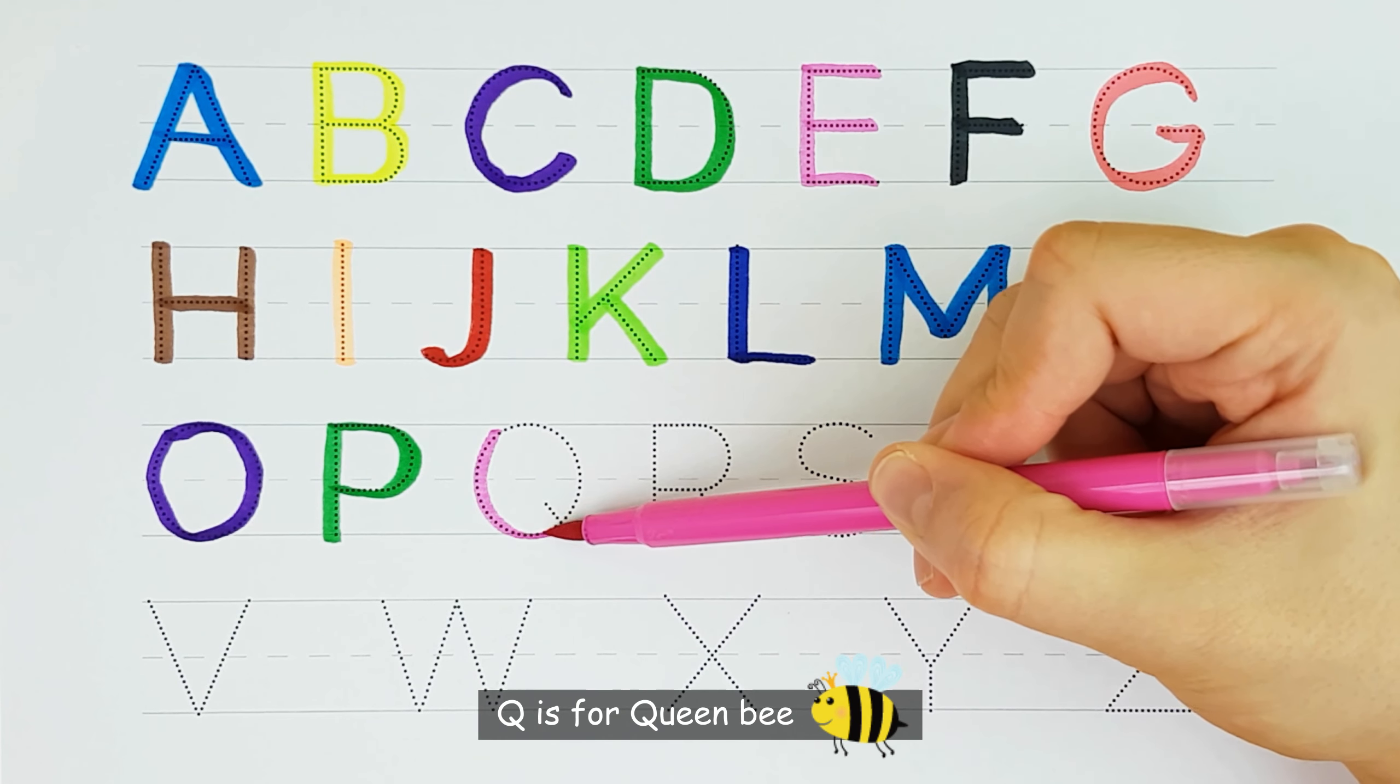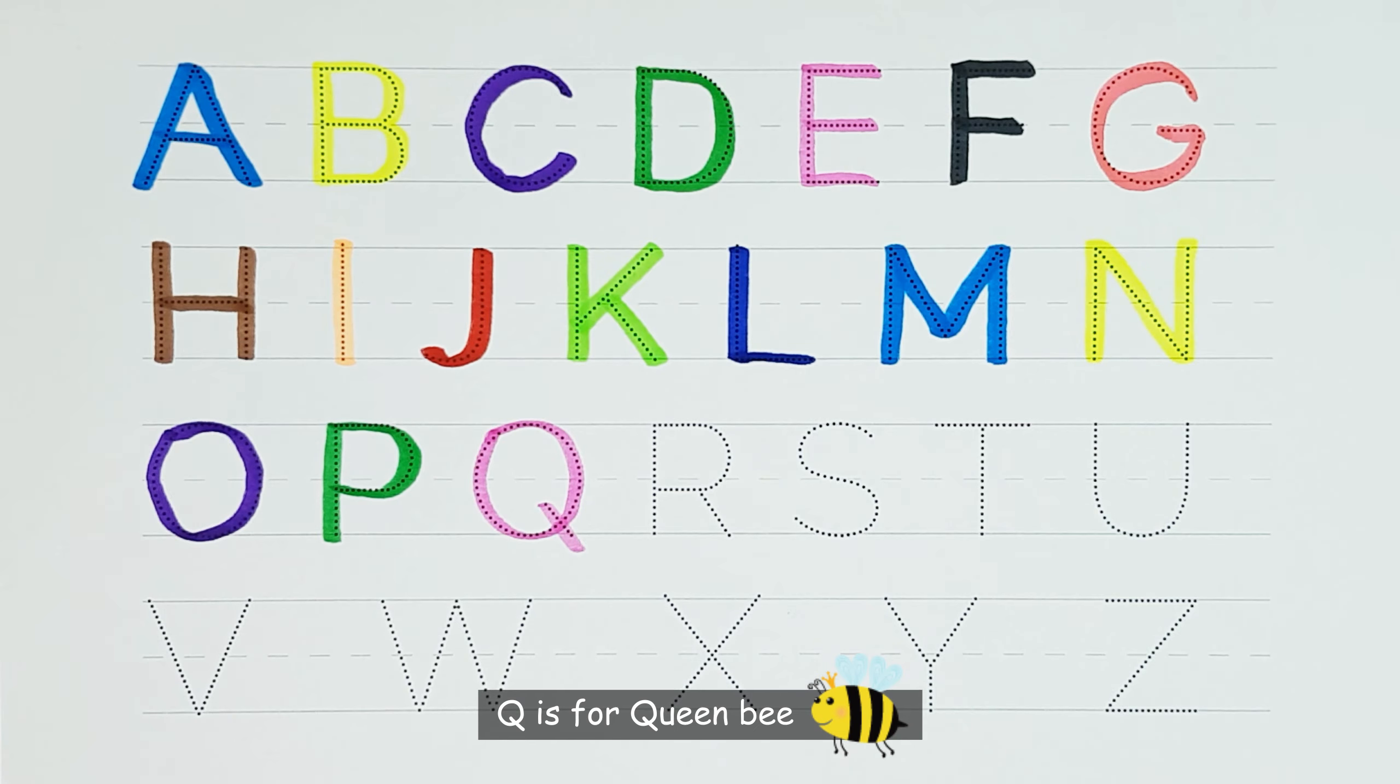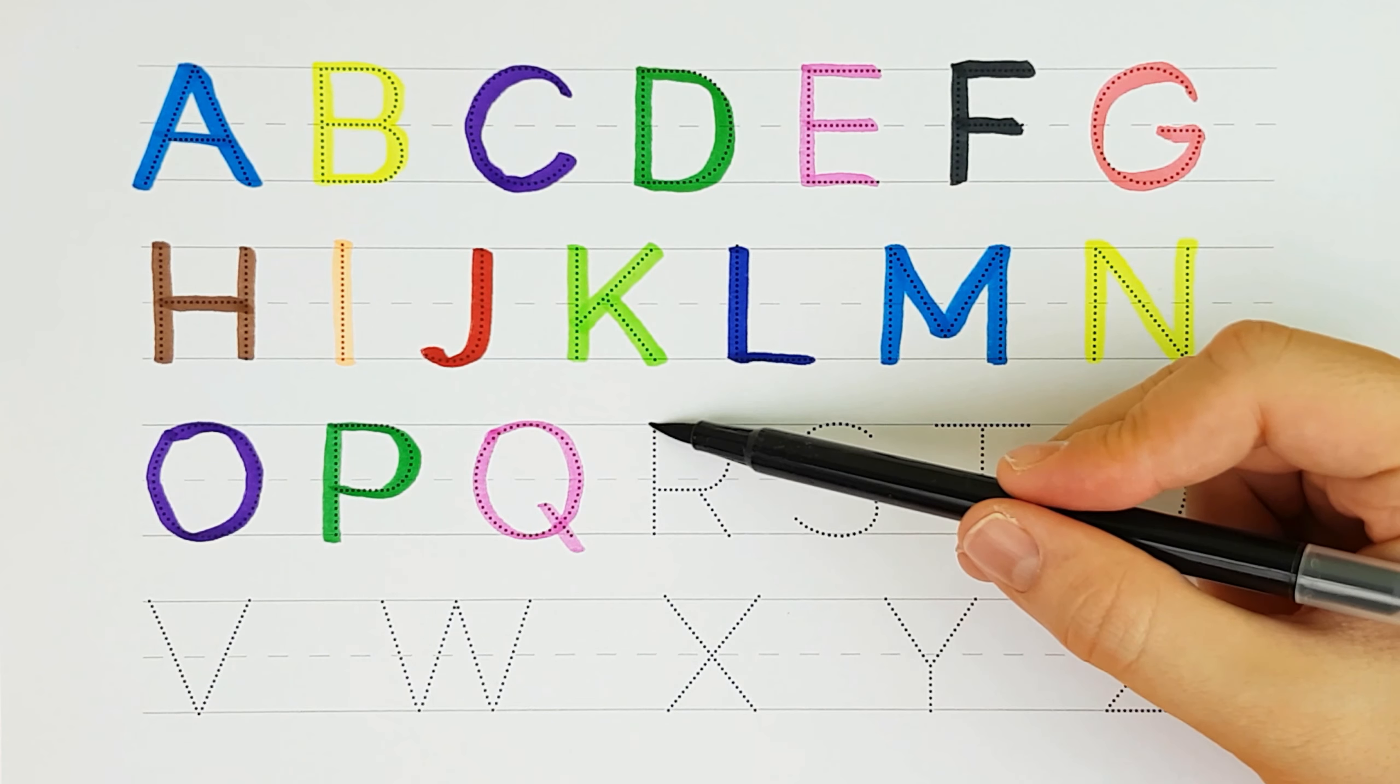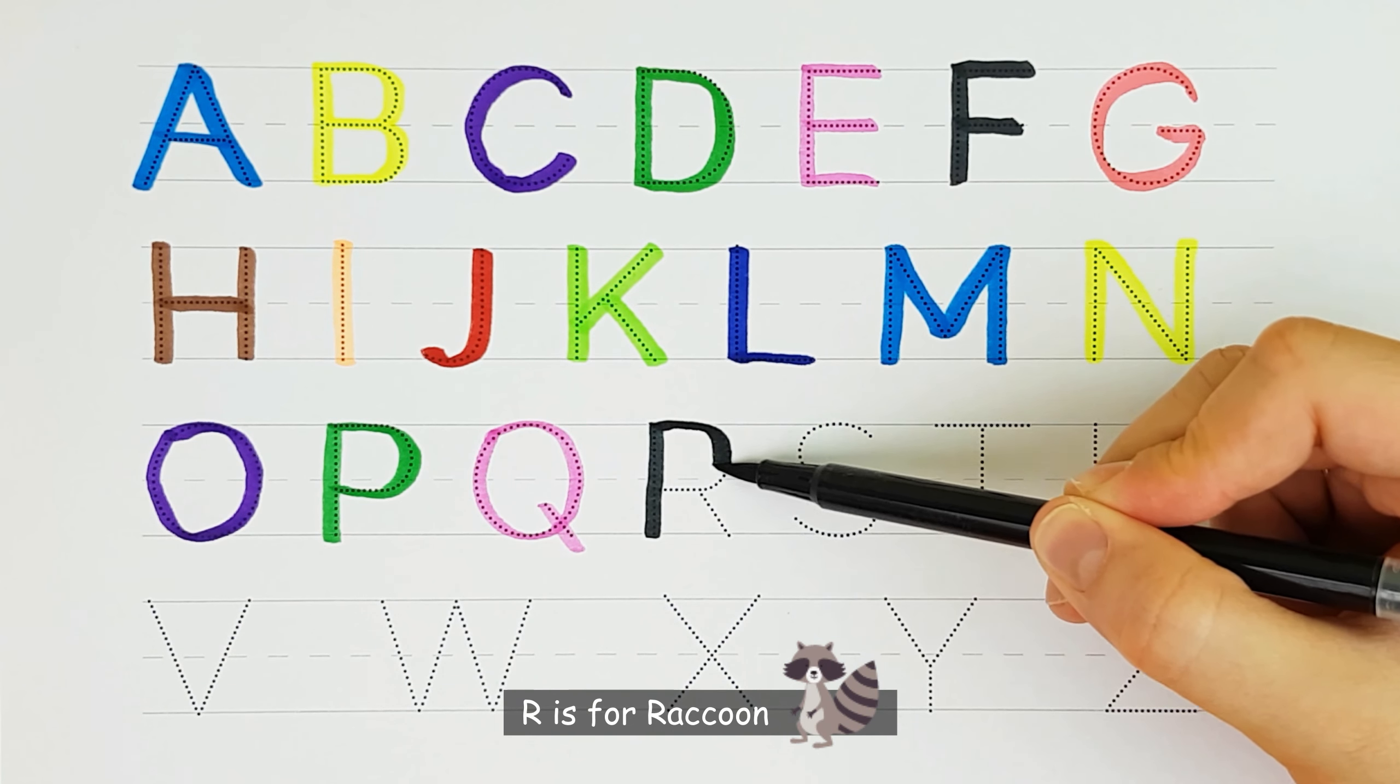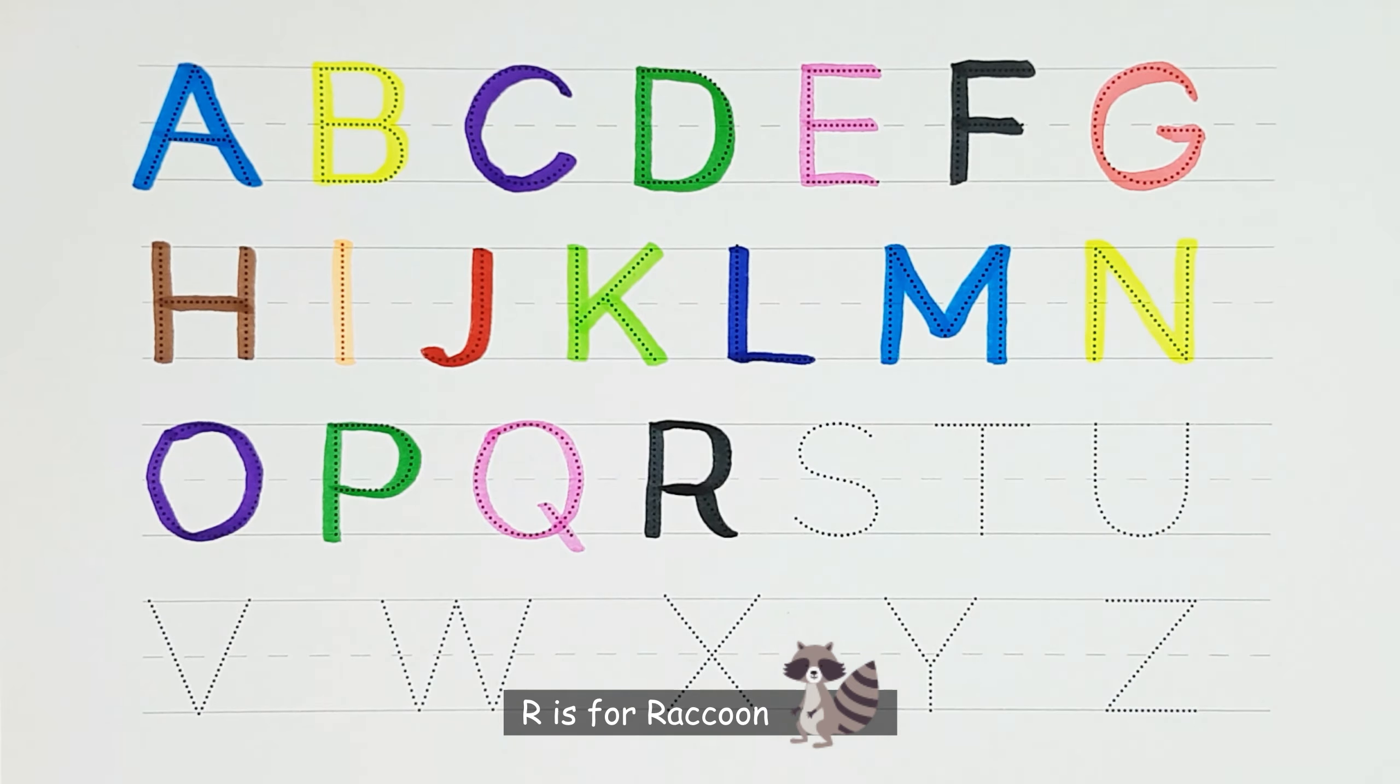Q. Q is for queen bee. Q. R. R is for raccoon. R.